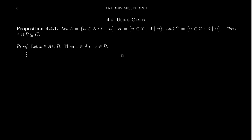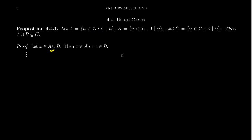The way we would start is: because we're trying to prove a set is a subset of another, we're going to start with an arbitrary element of the set that's supposed to be a subset. So we're going to say X belongs to the union of A and B. The next thing we do is unravel the definition. We know what A and B stand for, and we know what the union means. Since X belongs to the union of A and B, then X belongs to A or X belongs to B.